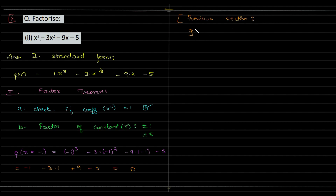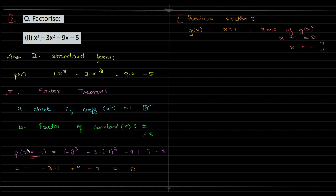We know that g(x) = x + 1, and the zero of g(x) is found by equating x + 1 = 0, so x = minus 1. Since p(x) also has minus 1 as its zero — matching g(x) — we can conclude that x + 1 is a factor of p(x). This is your remainder theorem and factor theorem combined.